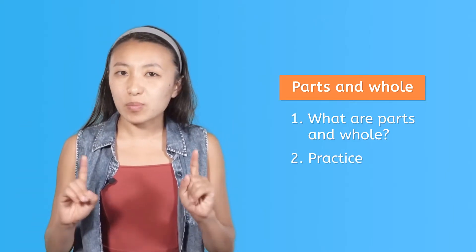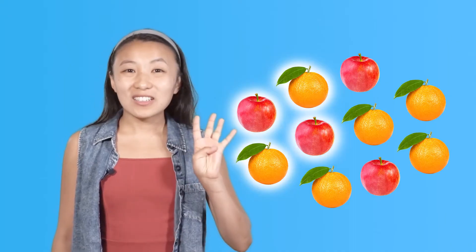Let's start with those bowls of fruit we saw before. We know there should be 10 pieces of fruit here in all. Let's count up this whole group to make sure that's right: 1, 2, 3, 4, 5, 6, 7, 8, 9, 10. There are 10 pieces of fruit here in this whole group.